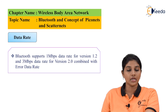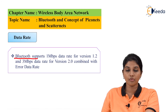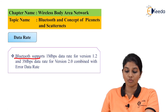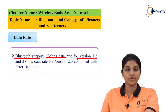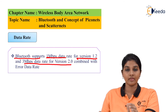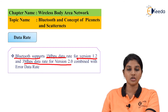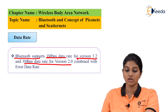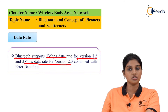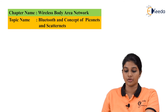Regarding data rate, Bluetooth supports up to 1 Mbps for version 1.2 and 3 Mbps for version 2.0, with the version 2.0 data rate combined with an enhanced data rate. This is what the Bluetooth technology provides in terms of data rate.